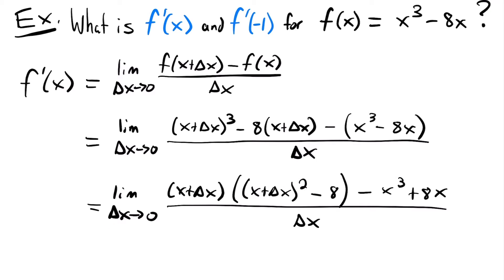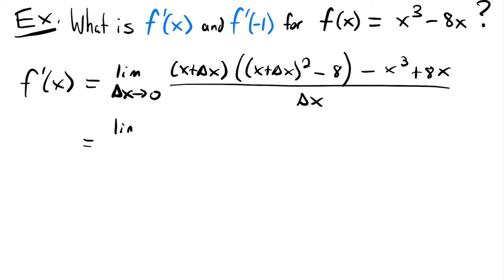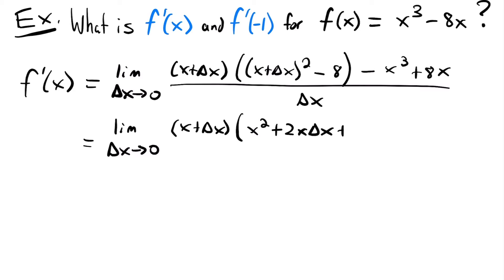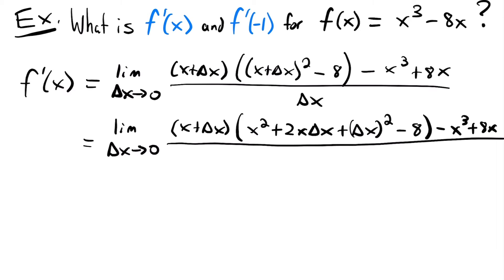I need more space, so let's move on. We're going to expand the squared quantity since that's easier than a cube. So we'll have (x plus delta x) times (x squared + 2x delta x + delta x squared) minus 8, then minus x cubed plus 8x, all over delta x. When you square a binomial, it's the first term squared plus twice the product of both terms plus the last term squared.